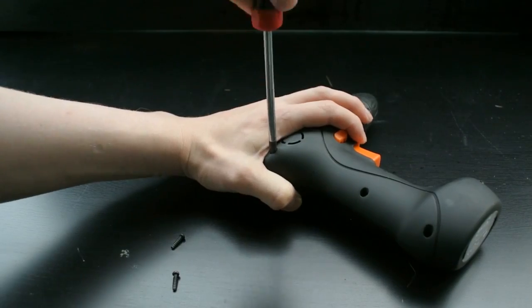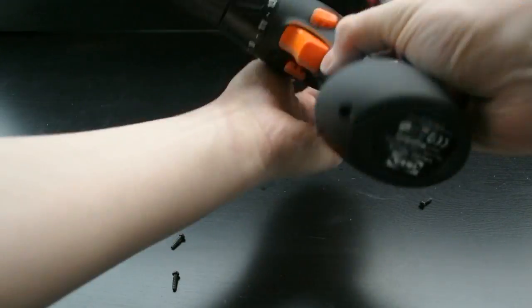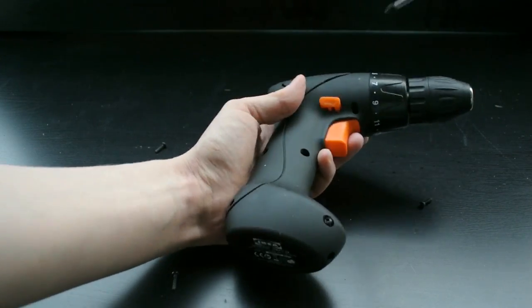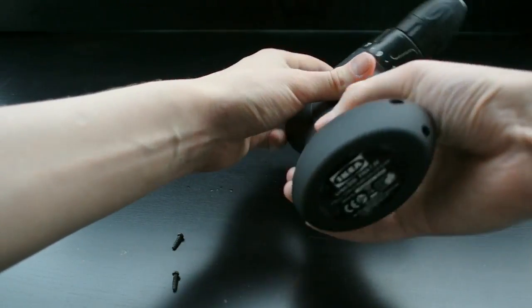It seems that this corner screw doesn't want to come out of its hole but you can just leave it in there because it's actually just going to let you open the case anyway.